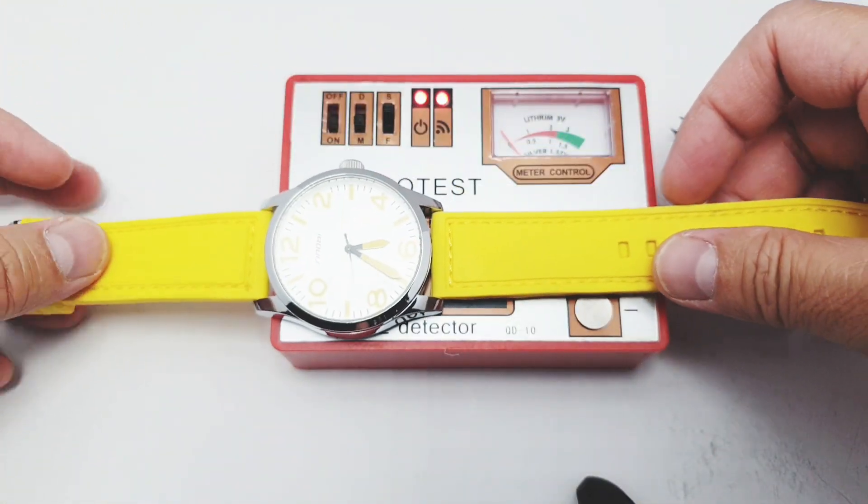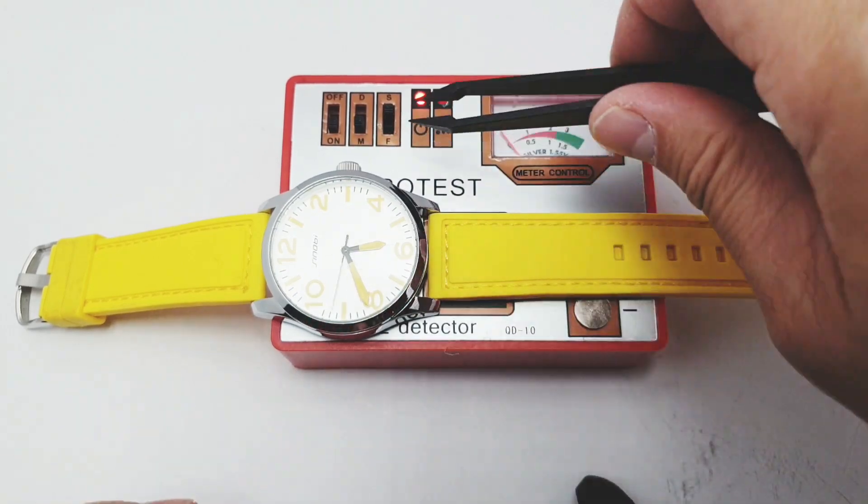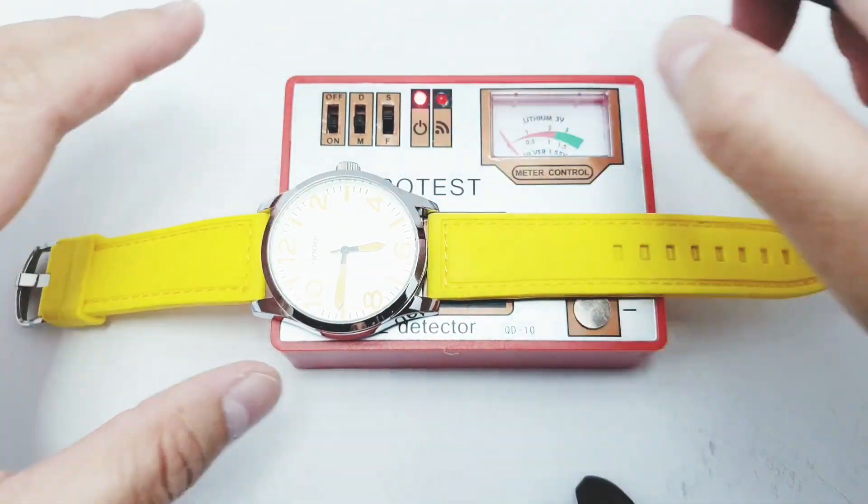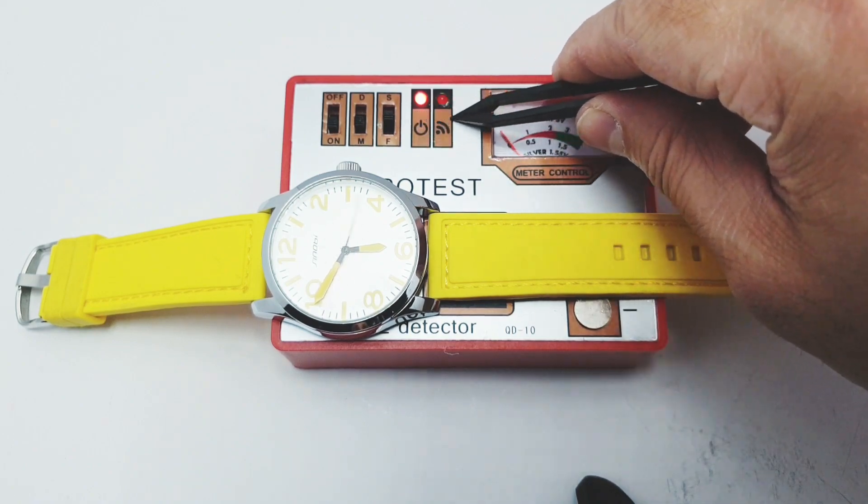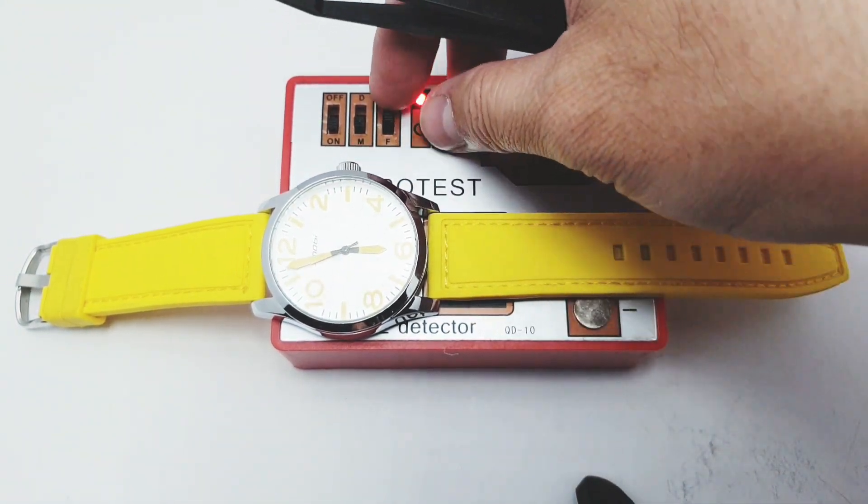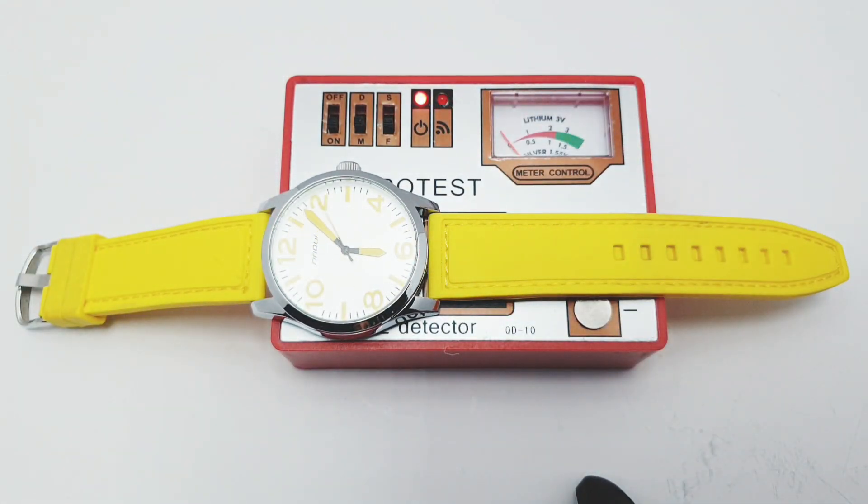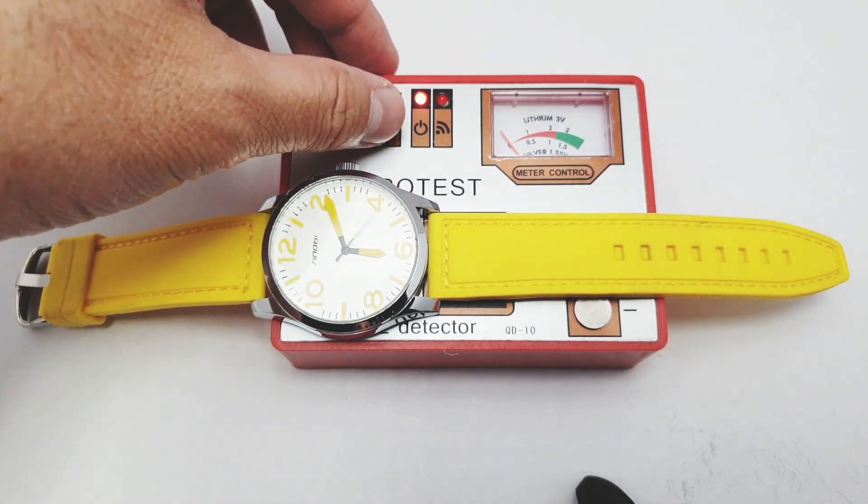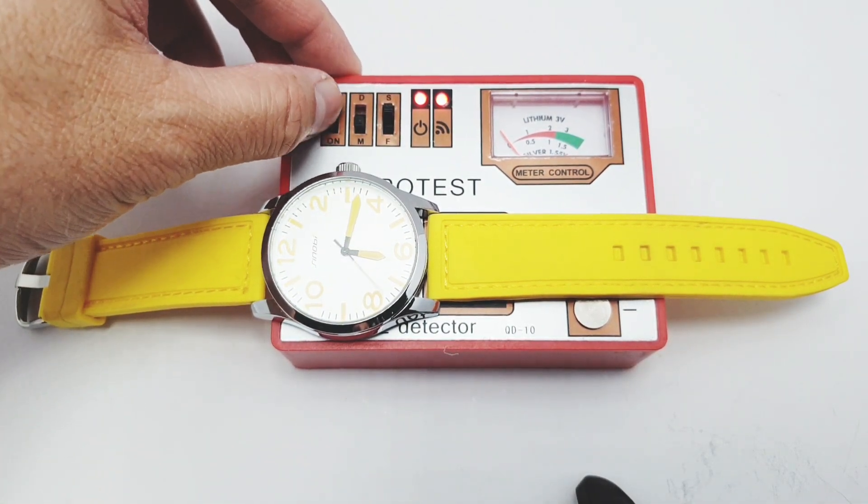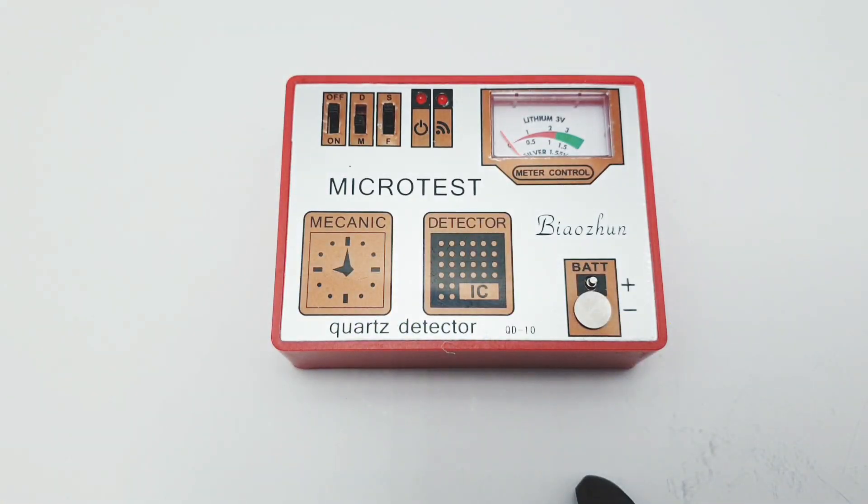So we're going to test for another function which is called the winding function. What you do is you set the lever to letter M and there's an adjustment here on the side which is S and F, which means S is for slow and F is for fast. What this feature does is that it forces your watch hands to rotate, so if there's any mechanical thing that gets stuck inside the watch it will be freed. This function is very useful for your watch.